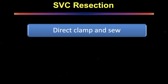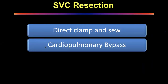Techniques for SVC resection include direct clamp-and-sew — clamp, cut, and suture quickly to minimize clamp time — or you can go on cardiopulmonary bypass, which gives better control of vascular hemodynamics and is better for more complex resections. The problem is when dealing with malignancy and cardiopulmonary bypass — there are considerations there that need to be weighed carefully.